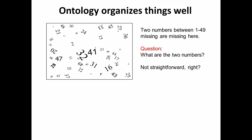What does ontology really do for us? Ontology organizes things well — it's very simple. Let's do an exercise. We have a bag containing numbers 1 to 49, but two numbers are missing. The question is: what are those two missing numbers? If you just look at this bag, it's actually very hard to figure out — it took me many minutes.